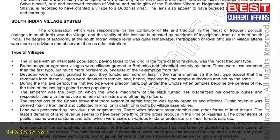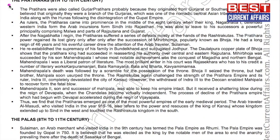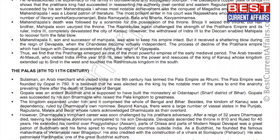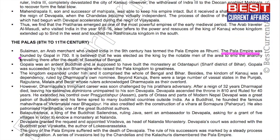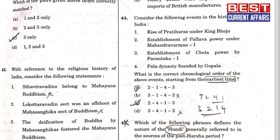On page 62, the Pratihars were active from the 8th to 10th century. The Pratihar power regained its lost glory after the succession of Meherbhoj, popularly known as King Bhoja, who had a long reign of 46 years. The Pal Empire was founded by Gopal in 755 AD. Sequencing all these events chronologically gives the correct answer: 2, 4, 1, 3 — C is the answer.